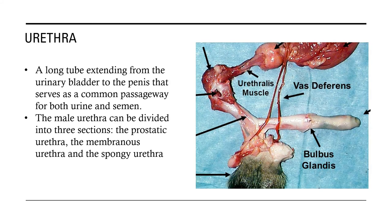Next is the urethra. The urethra is a long tube extending from the urinary bladder to the penis that serves as a common passageway for both urine and semen. The urethra is held closed by the urethral sphincter, which is a muscular structure that helps keep urine in the bladder until urination can occur. The male urethra can be divided into three sections: the prostatic urethra, the membranous urethra, and the spongy urethra.